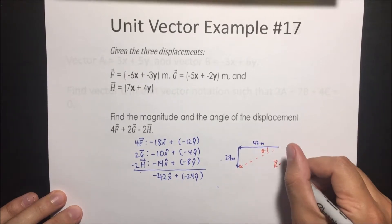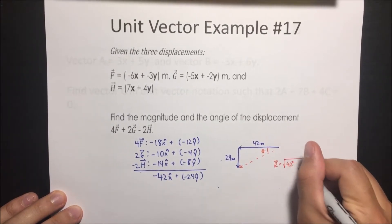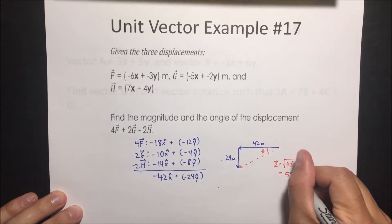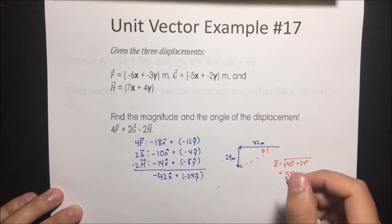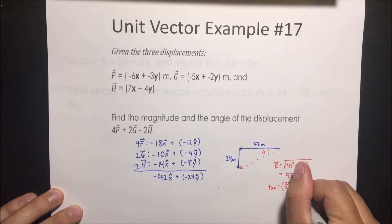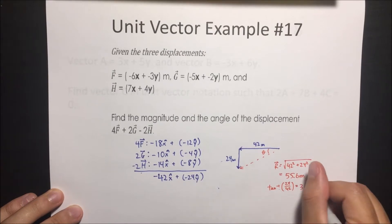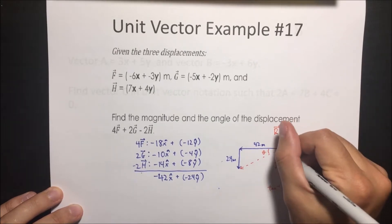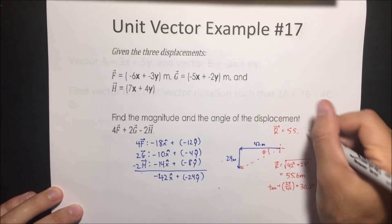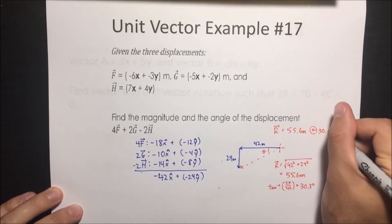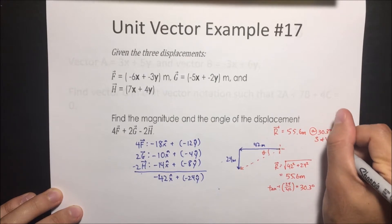The resultant vector is found using the Pythagorean theorem, giving us 55.6 meters. Then to get the angle, tan⁻¹(24/42) gives us 30.3 degrees. Since we're going left (west) and down (south), the final answer is 55.6 meters at 30.3 degrees south of west.